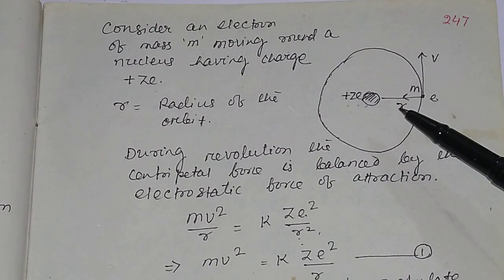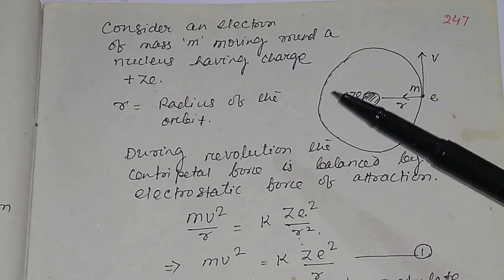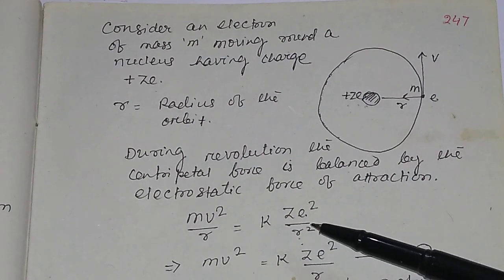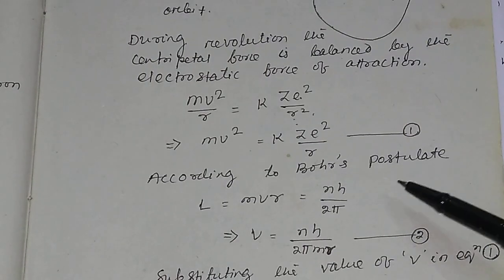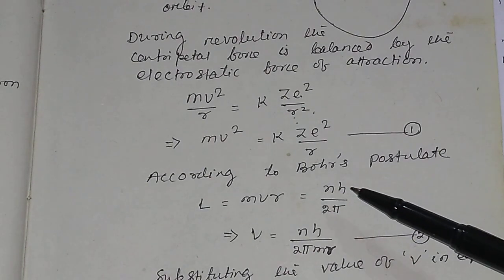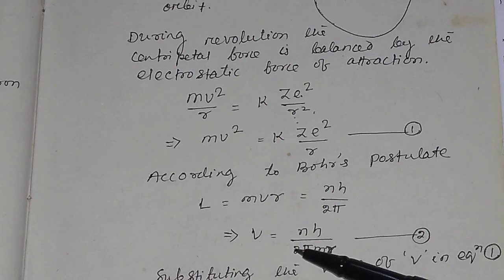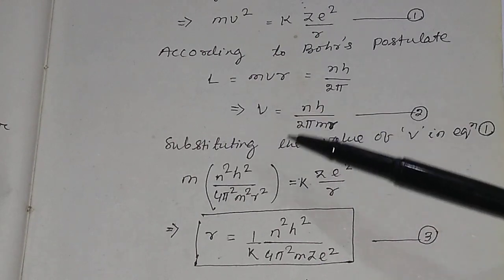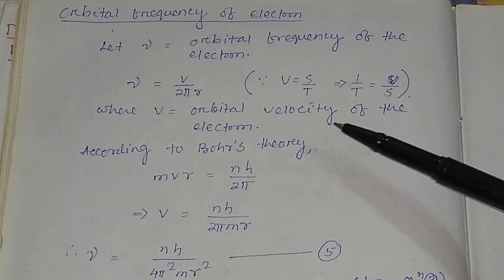In Bohr's model, when the electron revolves around the nucleus with radius R, the centripetal force equals the electrostatic force of attraction between the nucleus and the electron. Applying Bohr's postulate — angular momentum equals N times H divided by 2π — the velocity of the electron is V = NH / (2πMR). Substituting V gives the expression for the radius of the circular orbit.